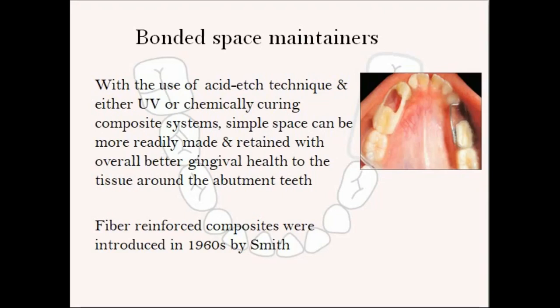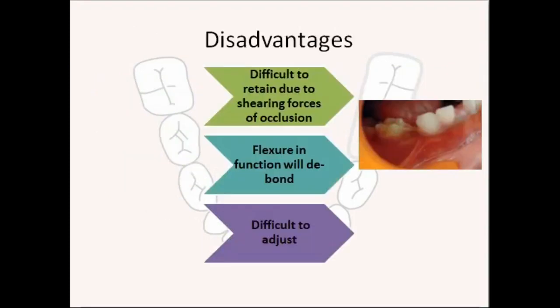Among the latest types are bonded space maintainers. Most space maintainers discussed previously were of the banded type, while the bonded type uses the acid-etch technique with either UV-curing or chemically-curing composite systems. It is a simple space maintainer that can be readily made and retained, with overall better gingival health around the abutment teeth. Fiber-reinforced composites, introduced by Smith in the 1960s, are used. Disadvantages include difficulty retaining due to shearing forces of occlusion, and flexure during function can debond the appliance. It is also difficult to adjust.